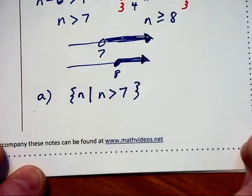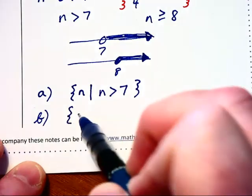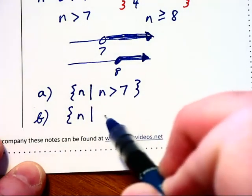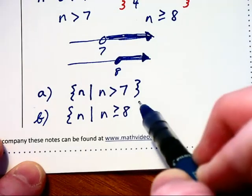And in part B, where we are finding their intersection, this will be the set of all n's such that n is greater than or equal to 8.